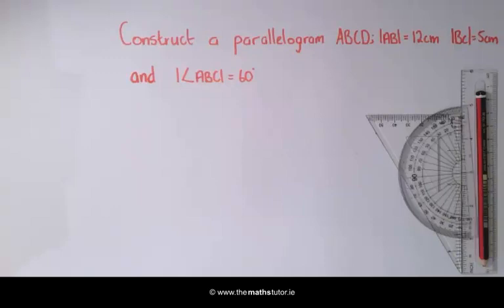We are going to construct a parallelogram given the length of the sides and the measure of the angles. In this example we are going to construct a parallelogram ABCD where AB is 12cm, BC is 5cm and the angle ABC is 60 degrees.